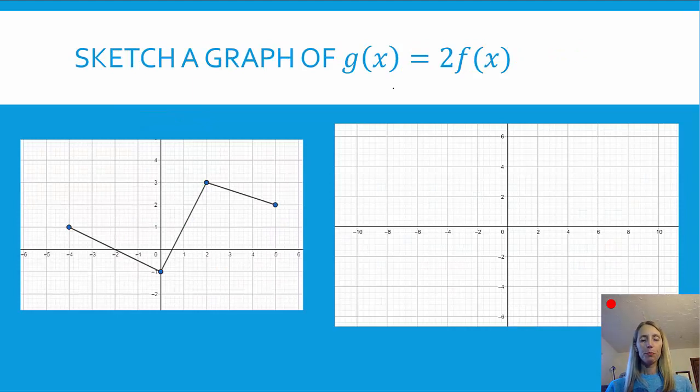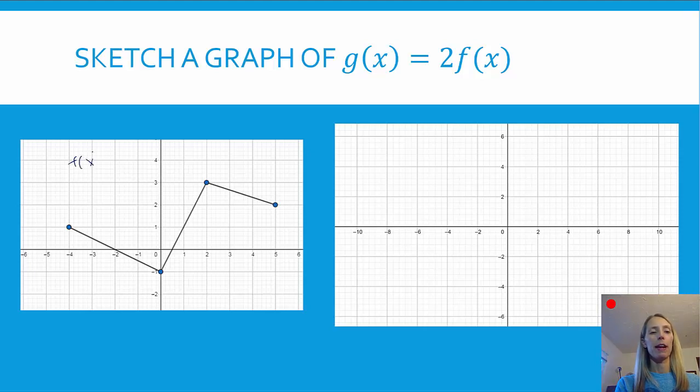Okay, so in our two examples, we're going to use this function that I've been using to show all of the different transformations. And this time, we have 2 times f(x). So f(x) is this guy over here, we're going to call this one f(x). And the fact that it's 2 times indicates to us that this is a vertical stretch.